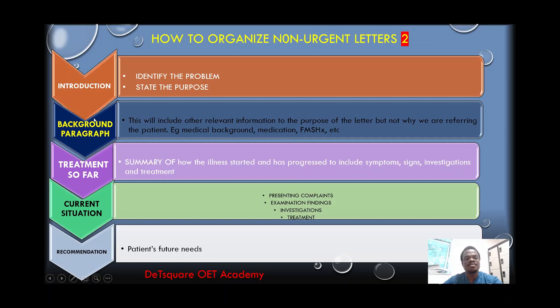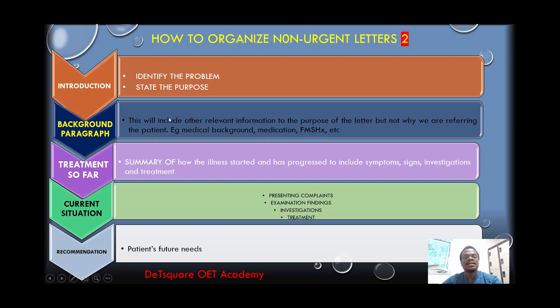In pattern two, the background information comes immediately after the introduction when it is directly the cause of why the patient developed the condition. For example, if the patient has recurrent pelvic inflammatory disease and has been on oral contraceptive pills — both high risk factors that can directly lead to ectopic pregnancy — that background information comes immediately after the introduction, before the treatment so far, current situation, and recommendation.